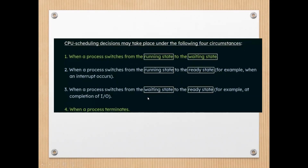The third circumstance is when a process switches from the waiting state to the ready state — for example, at the completion of an input-output request. When whatever event the process was waiting for has occurred, that particular process will be shifted from the waiting state to the ready state. It does not go directly for execution — it goes back to the ready queue, and then the short-term scheduler will assign the CPU.